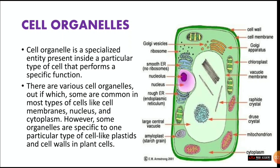Some organelles are specific to one particular type of cell, like plastids and cell walls in plant cells. We know that plant cells have an outermost layer called the cell wall, which is not present in human cells.